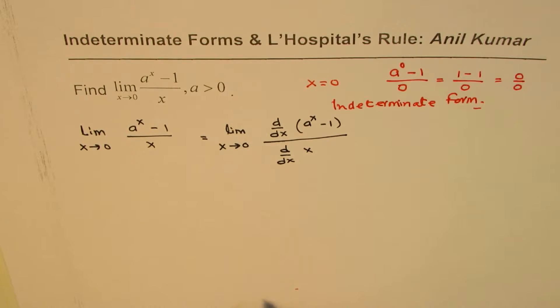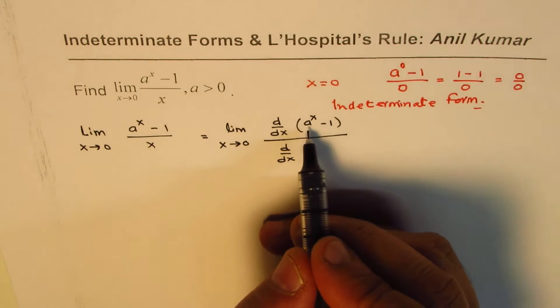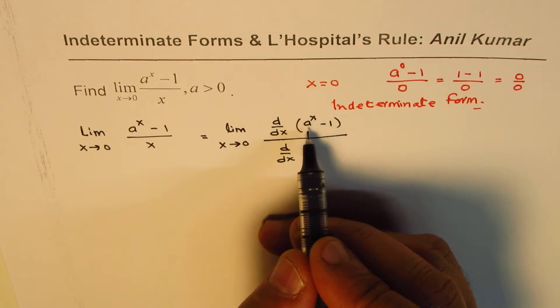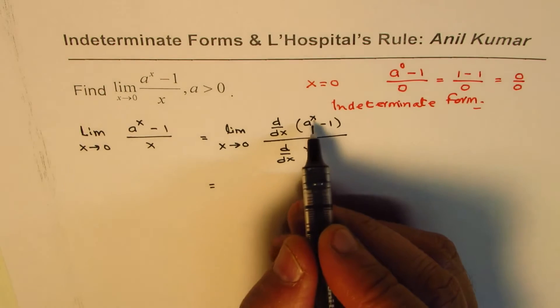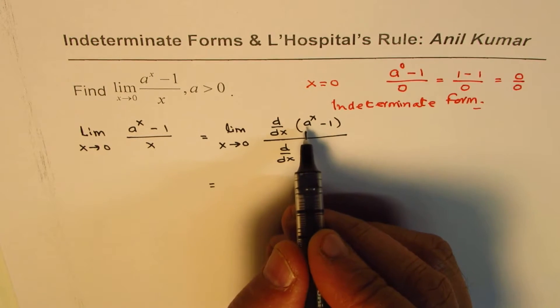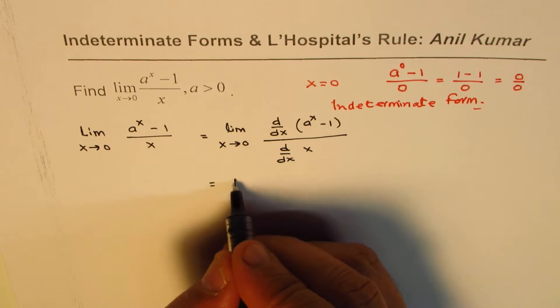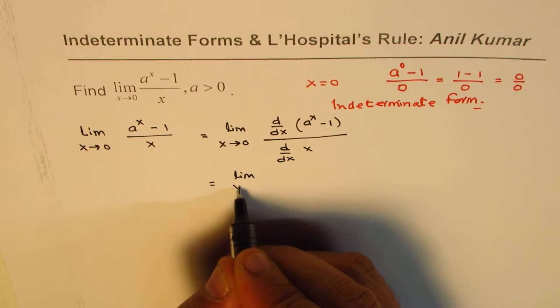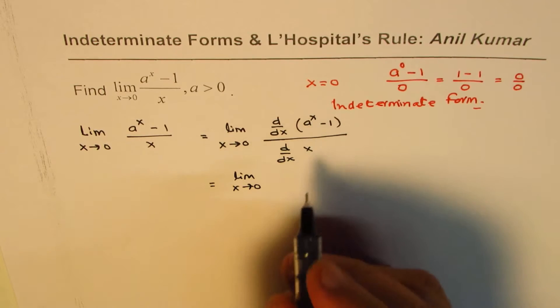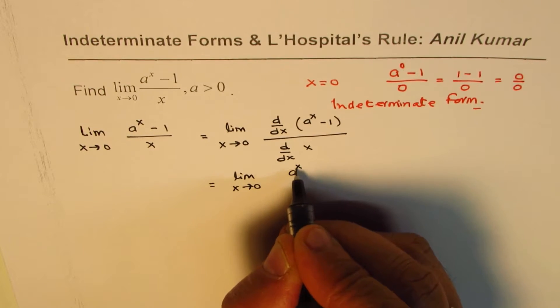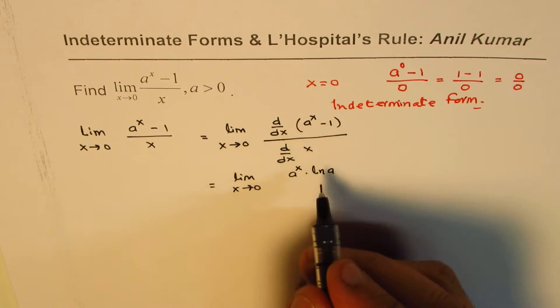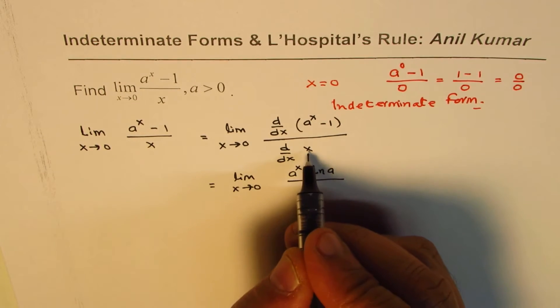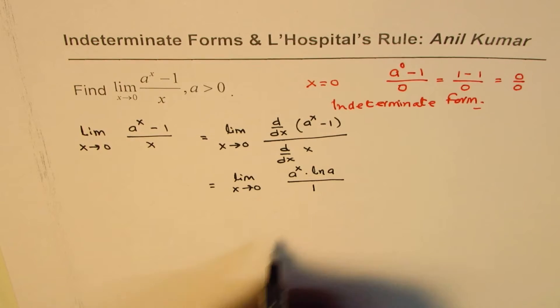What is the derivative of a to the power of x? You may have to brush up some of your knowledge about derivatives. You learn this in exponential functions and logarithmic functions. I'll just write down the derivative here: limit x approaches 0, derivative of a to the power of x is a to the power of x ln a, derivative of x is 1.